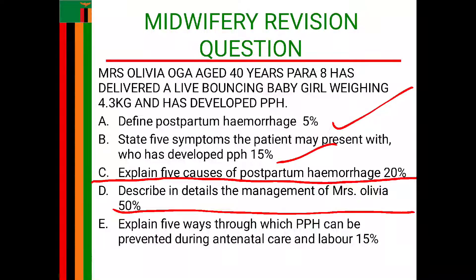The next heading is airway. On airway, you can say: I will assess the airway for patency and ensure the patient is positioned correctly in recumbent position with the head turned to one side to promote drainage of oral secretions. Apart from that, you can do suctioning of secretions to promote a patent airway. The next heading is breathing.